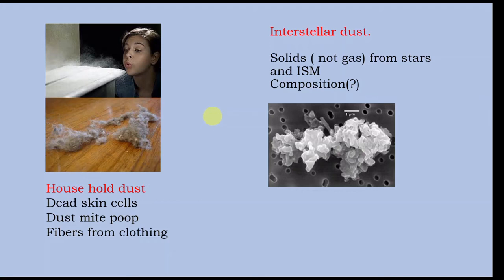The study of interstellar medium itself is a very specialized branch of astronomy and astrophysics these days. On my right you see a SEM photograph — a scanning electron microscope photograph — of interstellar dust collected from space via the International Space Station. The size of these dust particles is about a micrometer or even less. Their composition will vary depending on the source from which they have come. It is out of this material — interstellar medium where dust particles and gases are mixed up — that stars are formed.